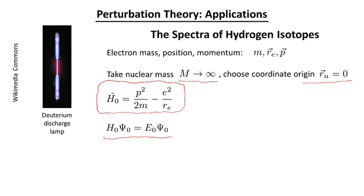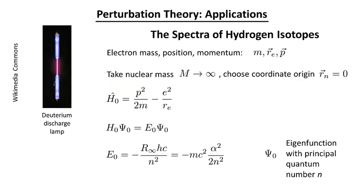So now a brief in-video quiz to give you an opportunity to understand what this equation really means. So I hope that in thinking about that, you came to the conclusion that E0, well first of all, that it is an energy of the hydrogen atom with an infinite nuclear mass, and that in fact it can be any such energy.